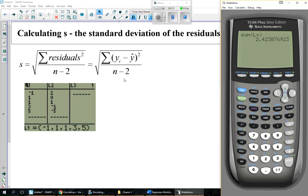4, 5 data points. n minus 2 is 3. Divide that by 3. And then I need to take the square root of the whole thing to find the standard deviation.